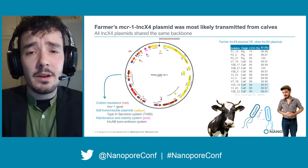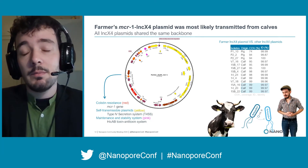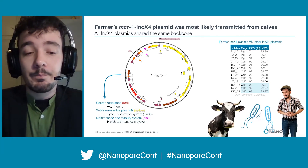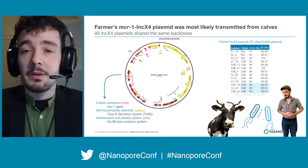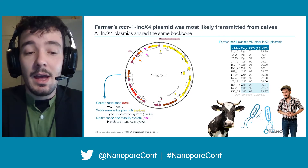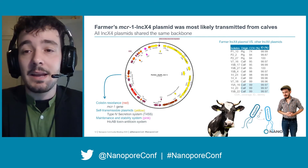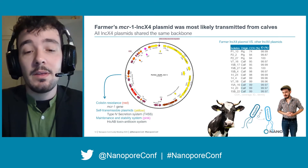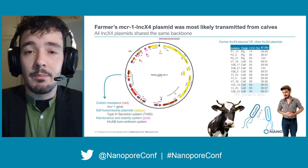Then we wanted to know where the plasmid from the farmer came from. We aligned the farmer's plasmid to the other INC-X4 plasmids and found that it presented 99% coverage and 99.97% identity with three bovine plasmids.